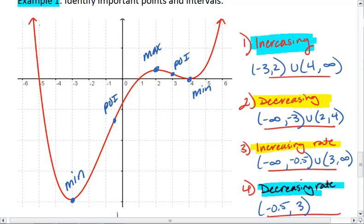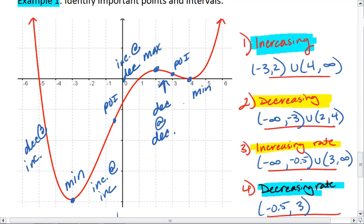I would see that the first section, up until my first important point, we're decreasing at an increasing rate. My next section is increasing at an increasing rate. Then I'm increasing at a decreasing rate. This section is decreasing at a decreasing rate.